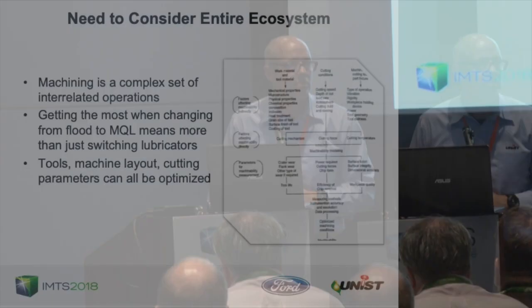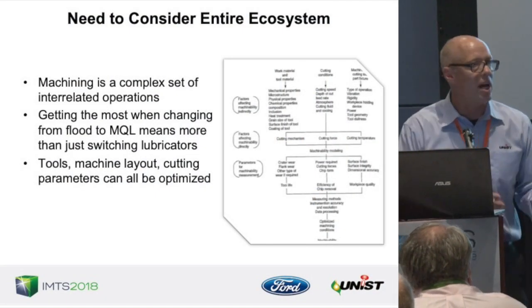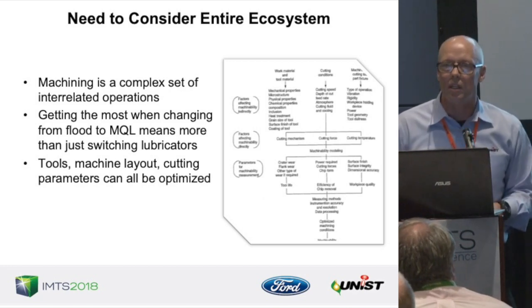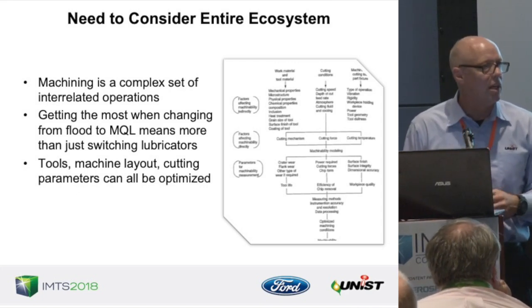Machining is a very complex process with many moving pieces, and when you change one part of the system, it often causes changes in other parts. You can't change just one element independently. For Ford, where a few pennies per part can translate to millions of dollars over a full production run, it's critical to have everything optimized. A job shop running lower volumes might tolerate a little more variability.